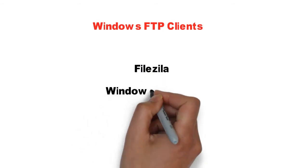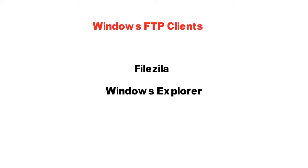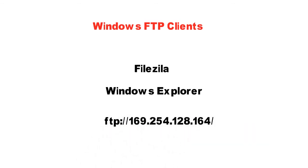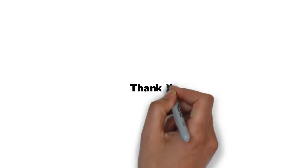In Windows you can use FileZilla as an FTP client, or you can also use Windows Explorer. When you open a folder in Windows, on the top bar you can establish an FTP connection by typing ftp://followed by the IP address of the remote device. You will get an FTP login prompt where you can type in the username and password. Then your remote file system will be listed and you can drag and drop or copy and paste files to any folder.